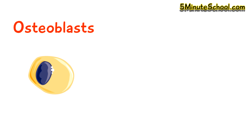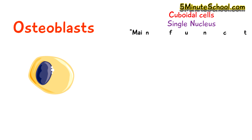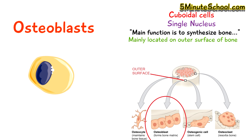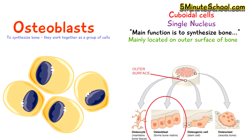Osteoblasts are cuboidal cells which have a single nucleus, and they have the main responsibility of synthesizing bone. They are mainly located on the outer surface of bone, and when they're undergoing bone formation they work as a group of cells together - it's not just one osteoblast making bone, they work together as a unit.